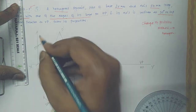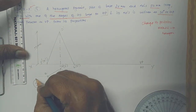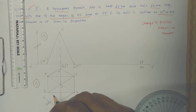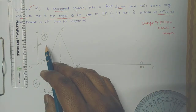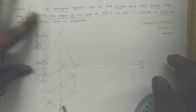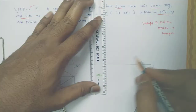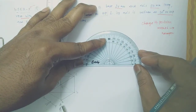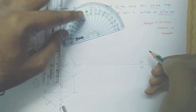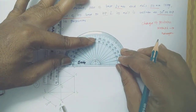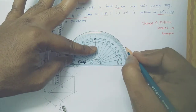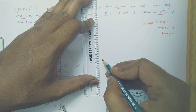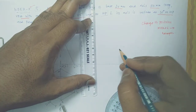We have drawn two diagrams: first the top view, then the front view — that is the first and second diagrams. The third diagram is the change of position — it is 30 degrees inclined, so we need to make the axis 30 degrees inclined. Let us take this distance and make a line at 30 degrees.